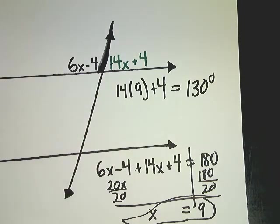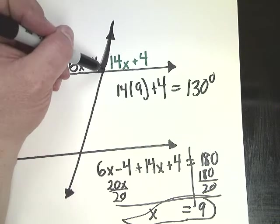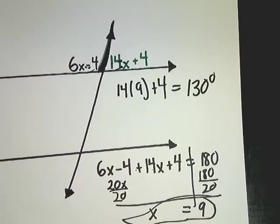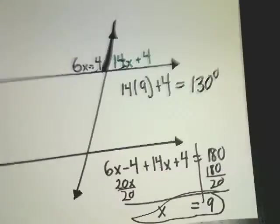So don't always go butt zorro butt. Make sure you pay attention. If it's on the same crossing, share a side, they're supplementary. If they're across from each other, they're equal. Or vertical angles.